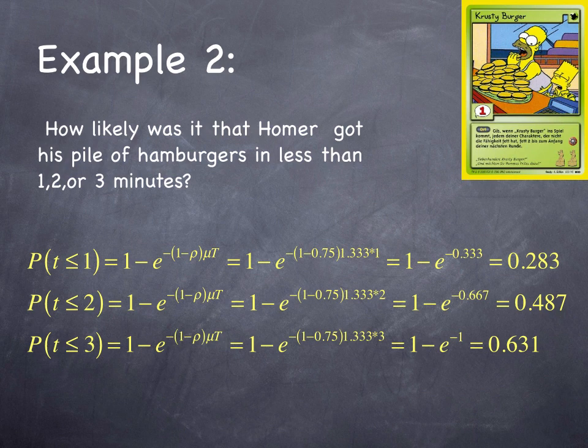Homer Simpson eating Krusty burgers is an impatient man. How likely is it that Homer got his pile of hamburgers in less than 1, 2, or 3 minutes? Well, we take the probability that t is less than or equal to 1, equals 1 minus e to the minus (1 minus rho) times mu t. We plug in our numbers. Rho is 0.75. Mu is 1.33 Homers per minute that can be served. And what's the probability that it is less than t equals 1? It turns out to be 28.3%.